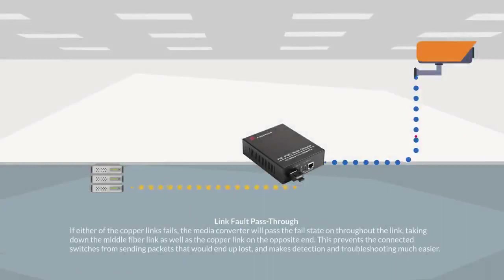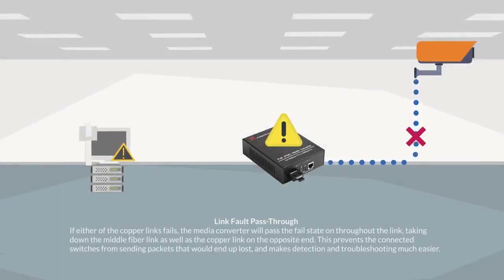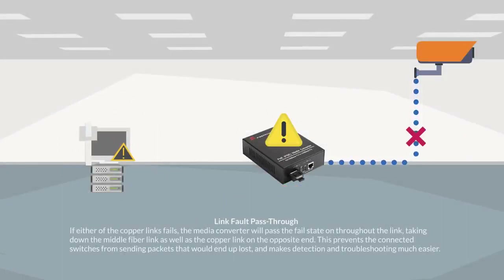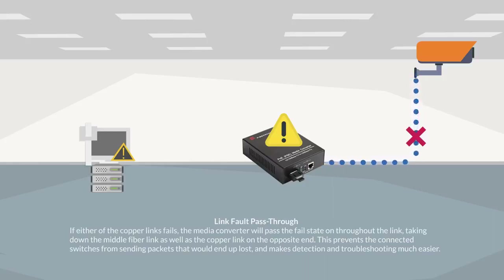Link Fault Pass-Through: if either of the copper links fails, the media converter will pass the fail state on throughout the link, taking down the middle fiber link as well as the copper link on the opposite end. This prevents the connected switches from sending packets that would end up lost, and makes detection and troubleshooting much easier.